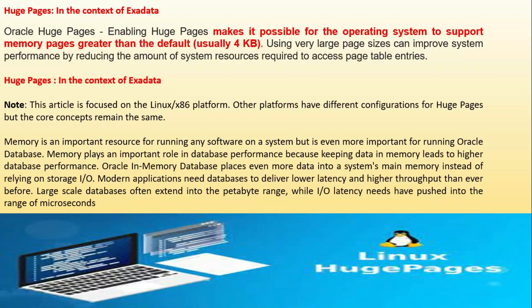Huge pages in the context of the Exadata environment: enabling huge pages makes it possible for the operating system to support memory pages greater than the default, usually 4KB. Using a very large page size can improve system performance by reducing the amount of system resources required to access page table entries. This article focuses on the Linux x86 platform; other platforms have different configurations for huge pages, but the core concept remains the same.